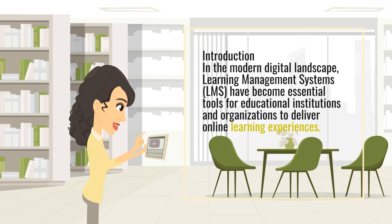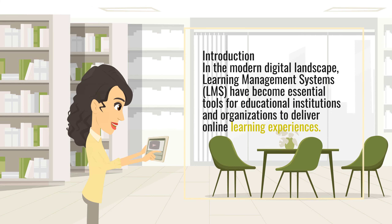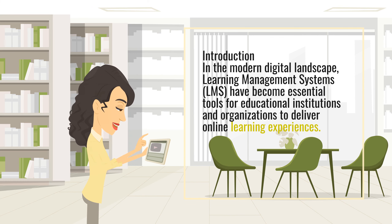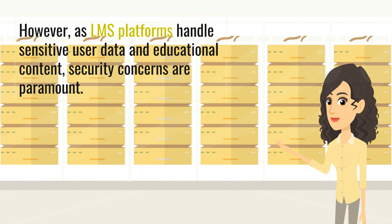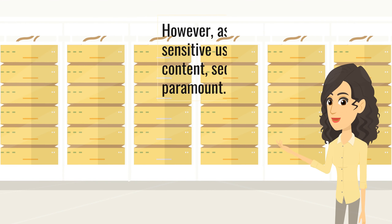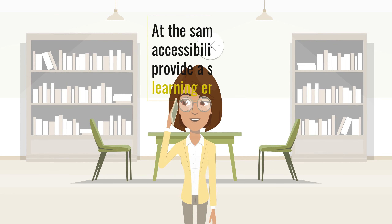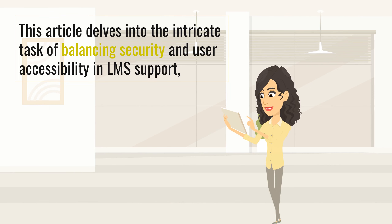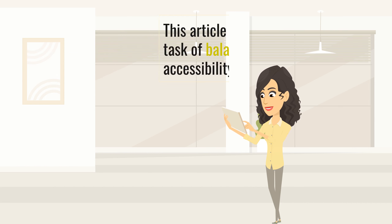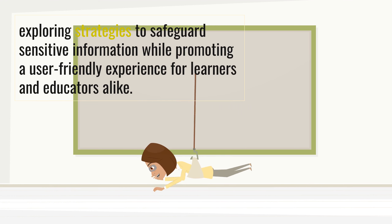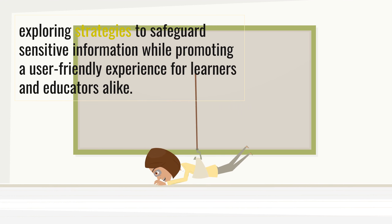Introduction. In the modern digital landscape, Learning Management Systems have become essential tools for educational institutions and organizations to deliver online learning experiences. However, as LMS platforms handle sensitive user data and educational content, security concerns are paramount. At the same time, ensuring user accessibility is equally crucial to provide a seamless and inclusive learning environment. This article delves into the intricate task of balancing security and user accessibility in LMS support, exploring strategies to safeguard sensitive information while promoting a user-friendly experience for learners and educators alike.